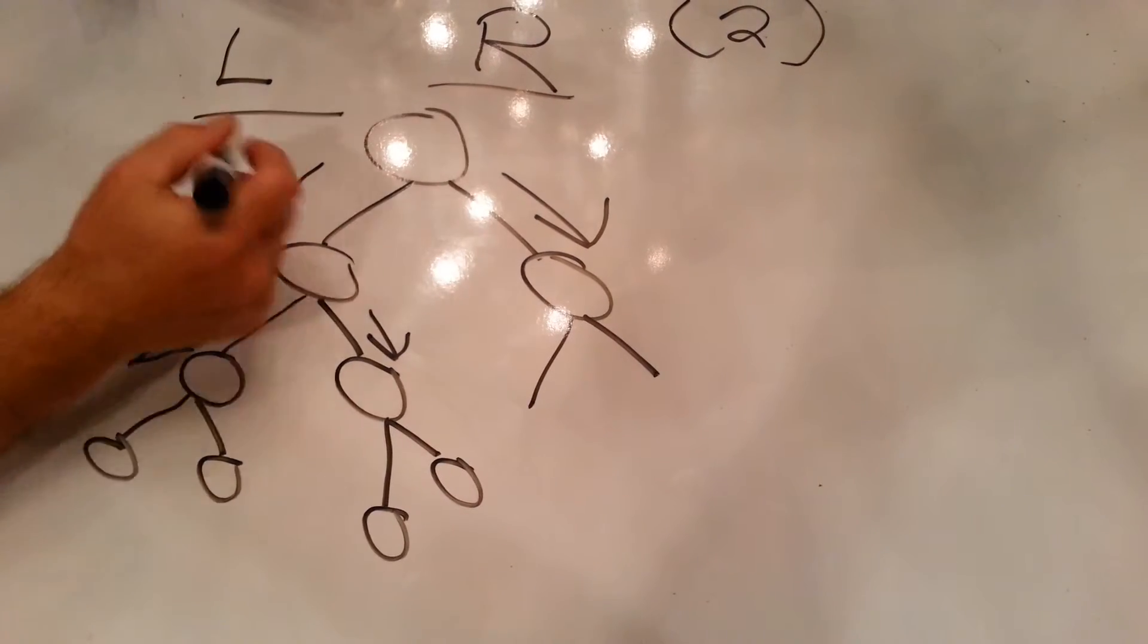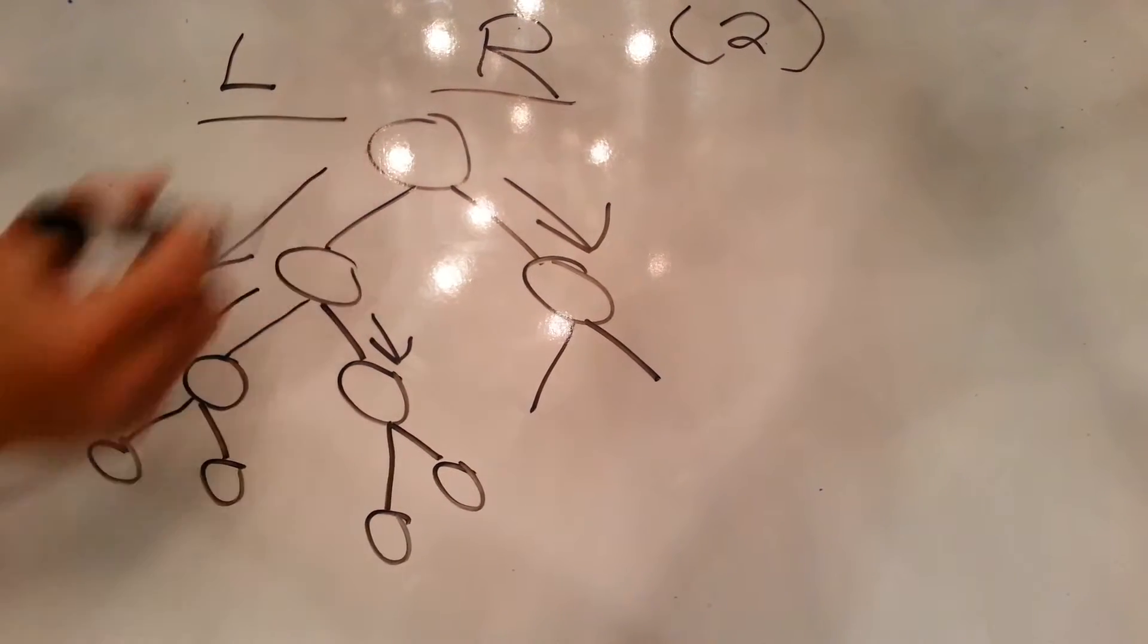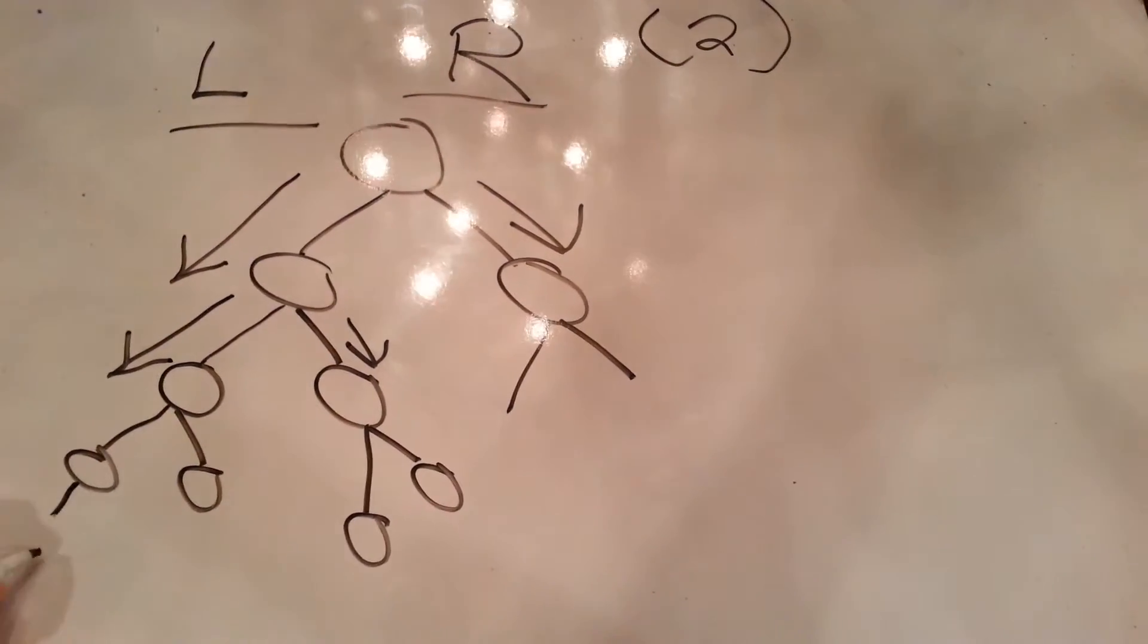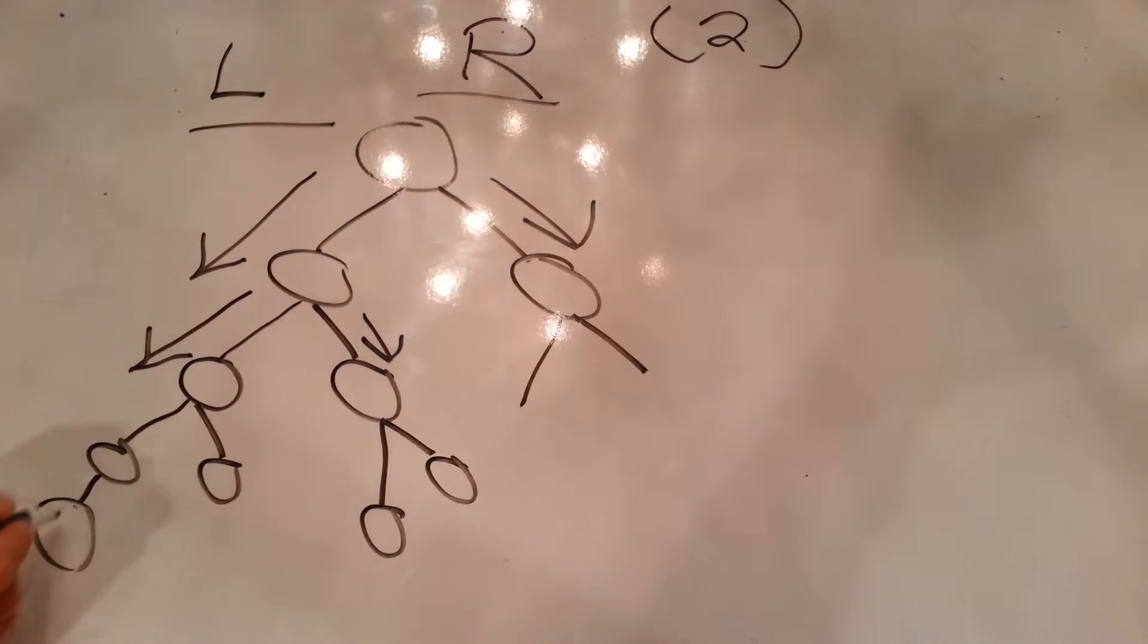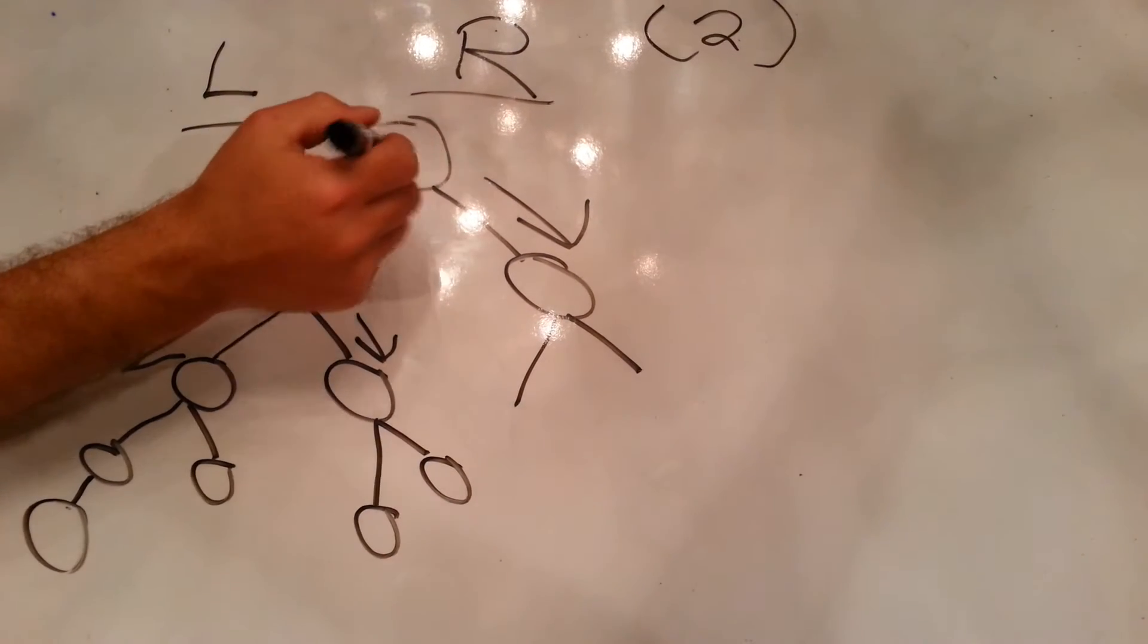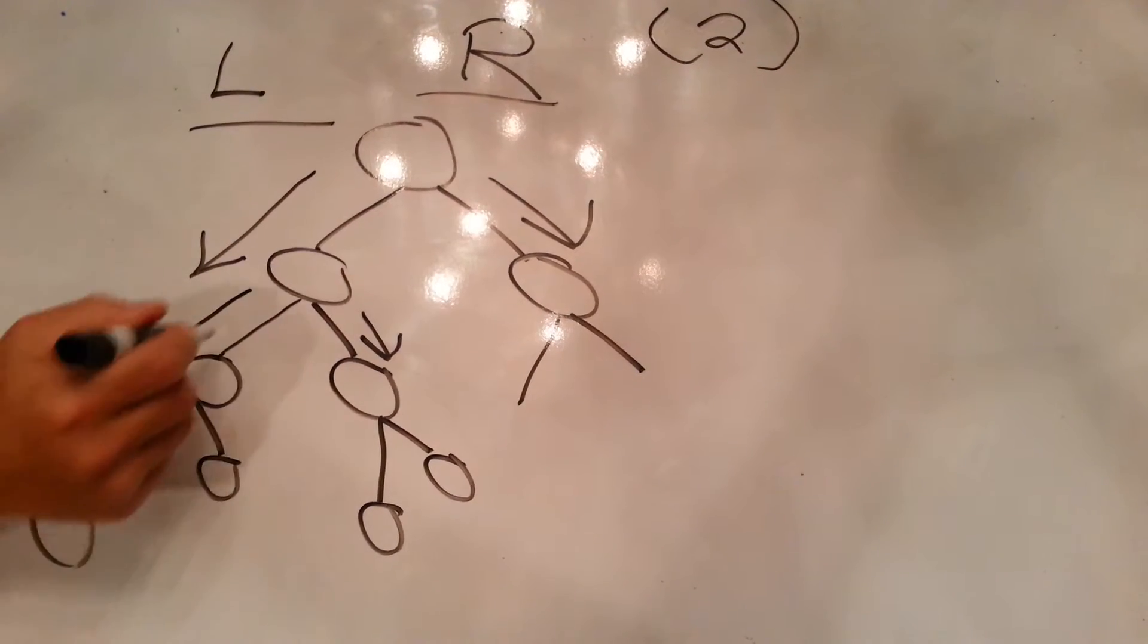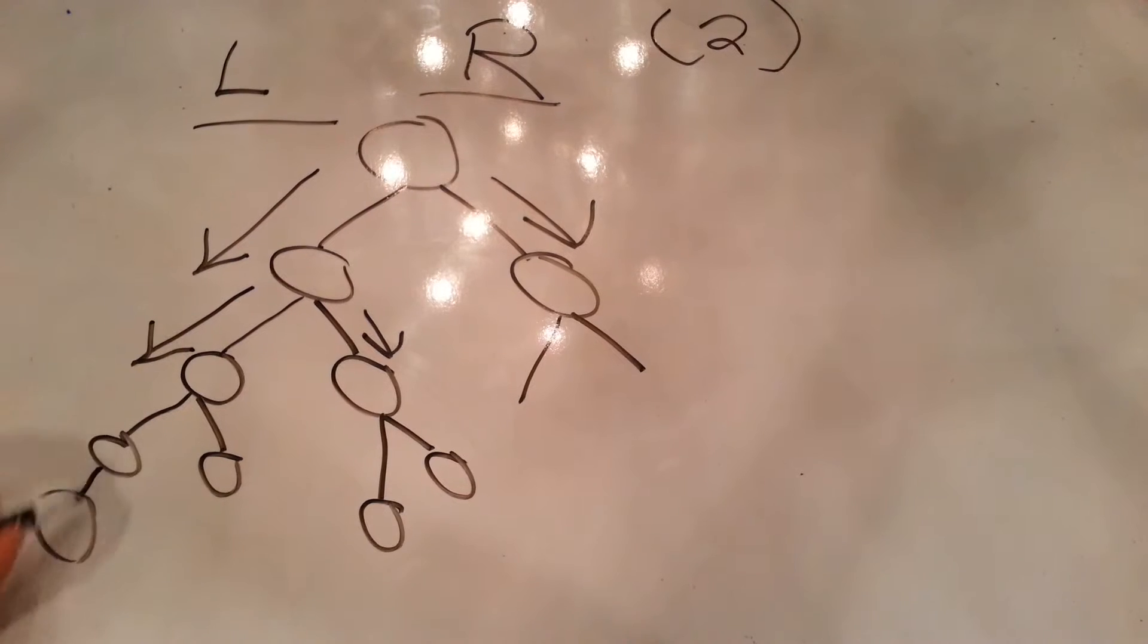So your next person will go to the lesser leg, which in this scenario is here. This person here will now benefit from the person you put in because all the volume is counted by the whole leg.